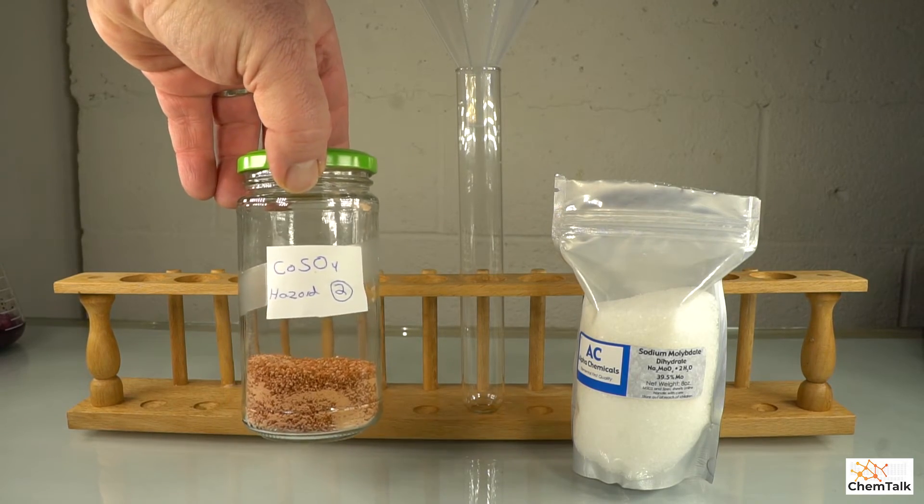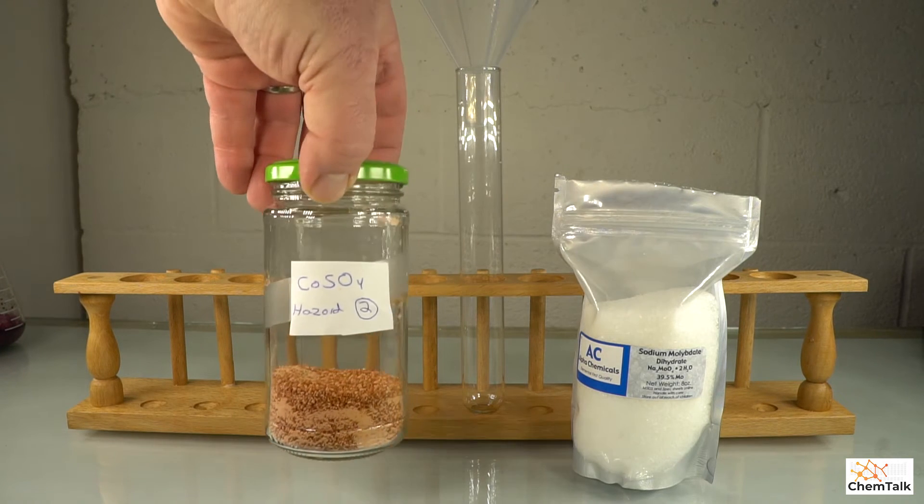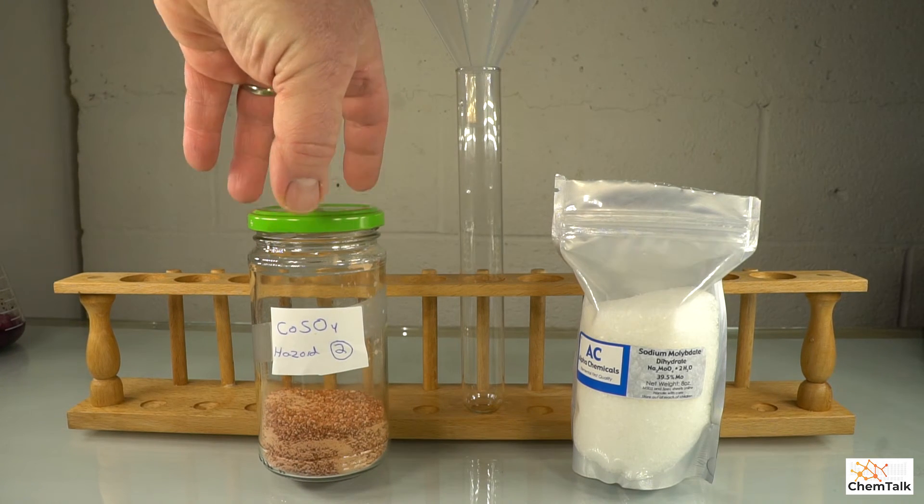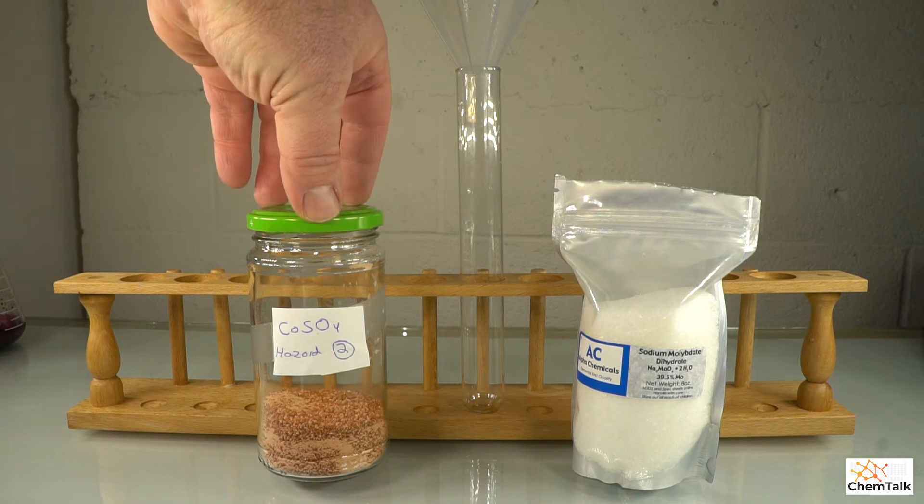And here is some cobalt 2 sulfate, and it's a really nice pinkish red compound. And the thing about cobalt is that it forms complexes with water that can be blue or red, depending on the pH of the solution.